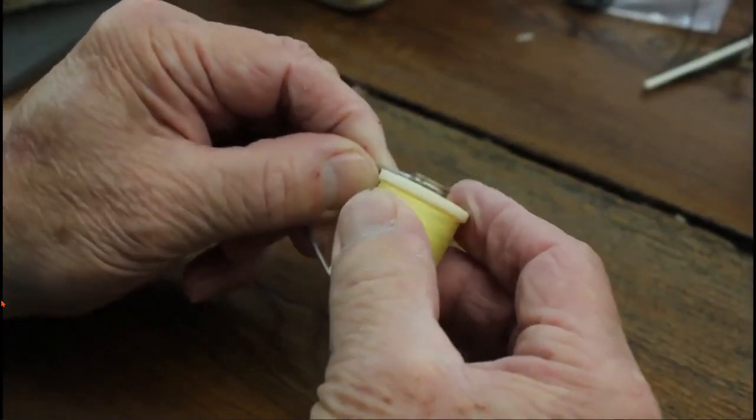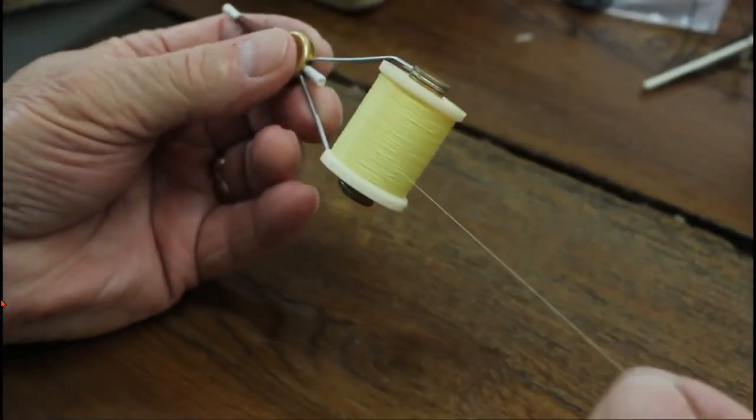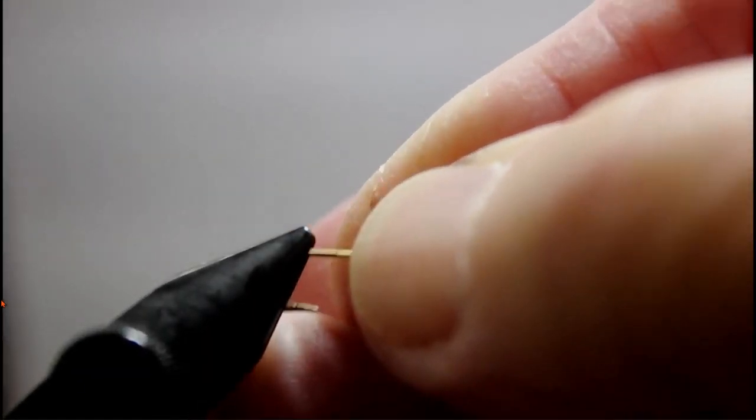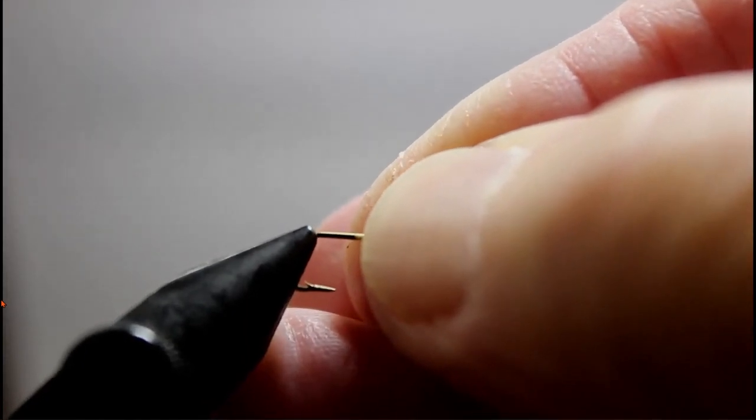Terry starts by loading a bobbin with Danville floss thread in a light yellow. Start by placing your jig securely in the jaws of your tying vise.